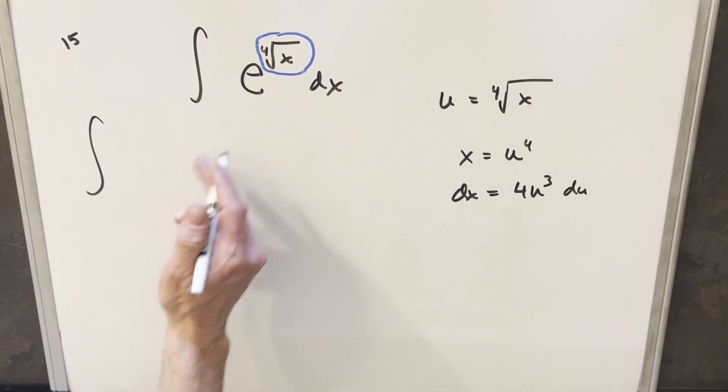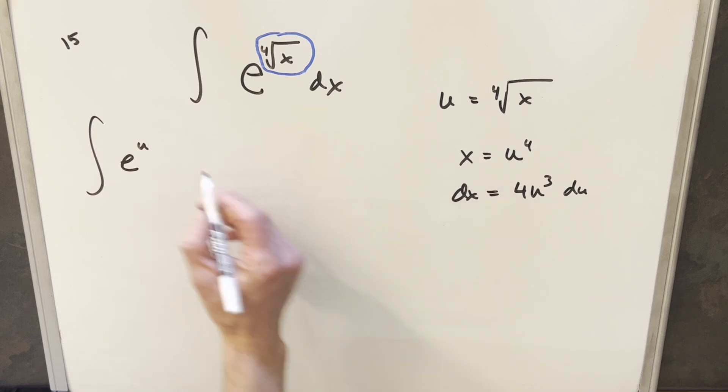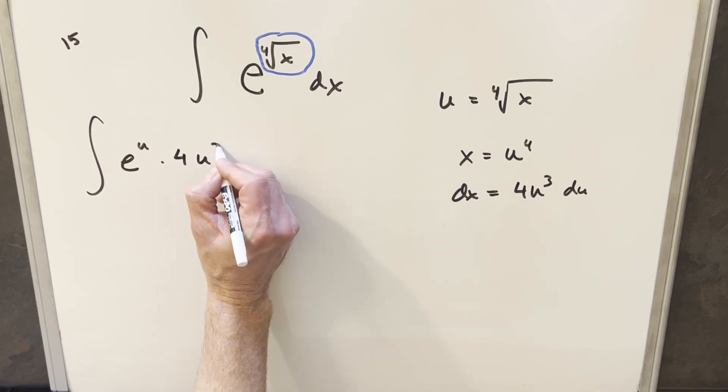So then we'll just go ahead with this. So then here, we're just going to have e to the u. But now for our dx, we're going to have all this. We're going to have this going to be times 4u cubed du.